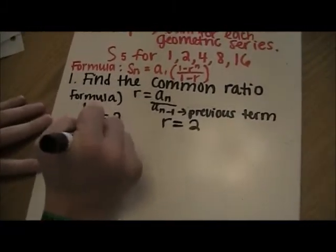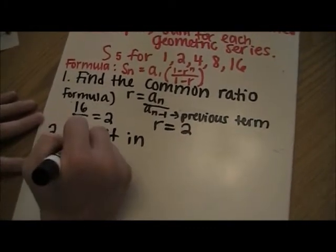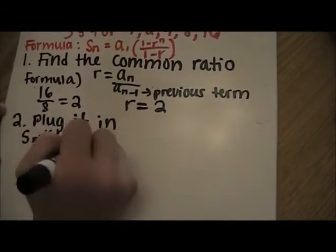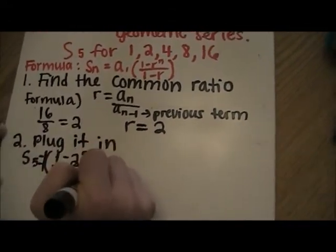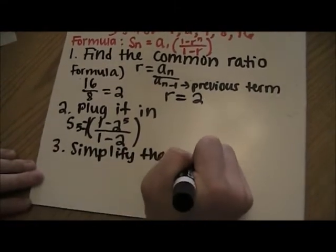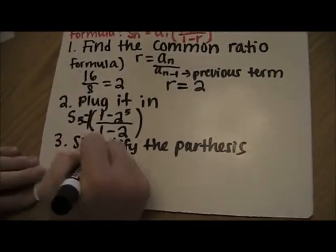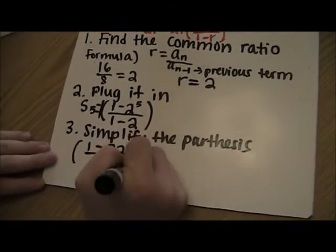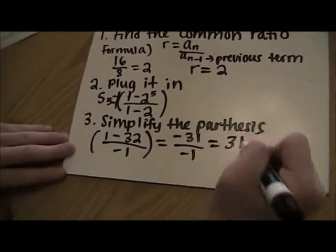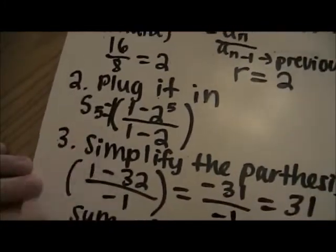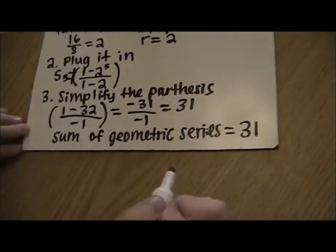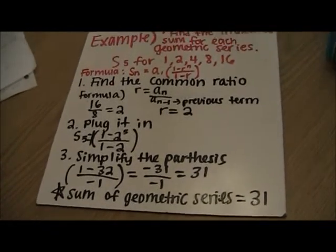The second step is to plug all the numbers into the formula. So it's s sub 5 equals 1 times the quantity 1 minus 2 to the 5th power divided by 1 minus 2. Simplifying: 2 to the 5th is 32, so it's 1 minus 32 over negative 1. That gives negative 31 divided by negative 1, which equals 31. Because a sub 1 is 1, multiplying doesn't change the answer. So the sum of the geometric series is 31. And that is how you find the sum of a geometric series.